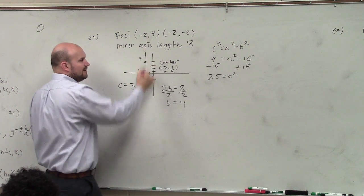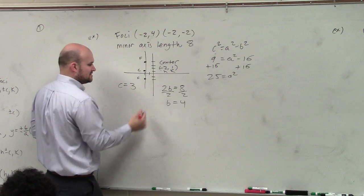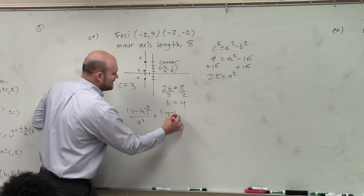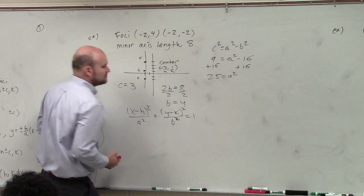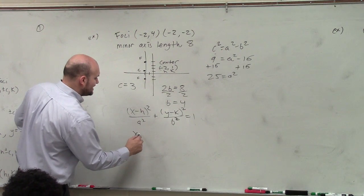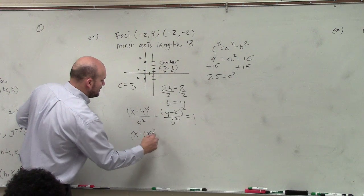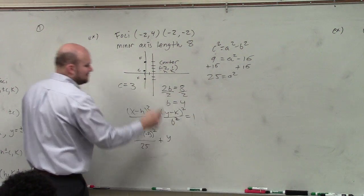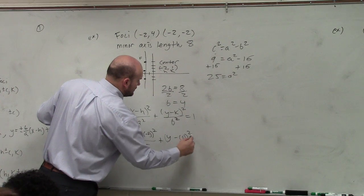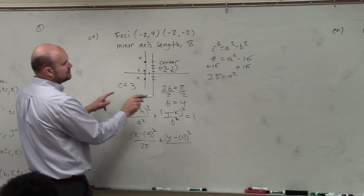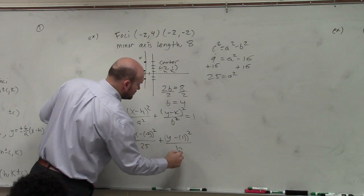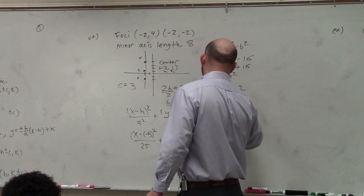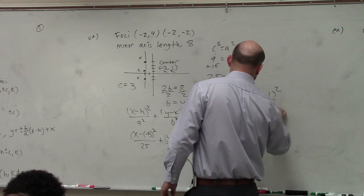So the formula I'm going to use is x minus h squared all over a squared plus y minus k squared all over b squared equals 1. So now I just plug in my information. x minus a negative 2 squared over a squared, which we said was 25 plus y minus 1 squared all over b squared, which is 16 equals 1. So my final answer is x plus 2 squared over 25 plus y minus 1 squared over 16 equals 1.